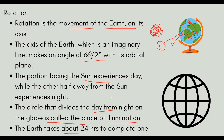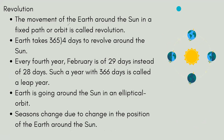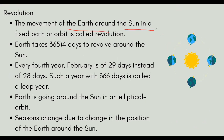The Earth takes 24 hours to complete one rotation. Now, if we talk about revolution, the Earth moves around the sun. Whenever a planet moves around the sun, it takes a lot of time.